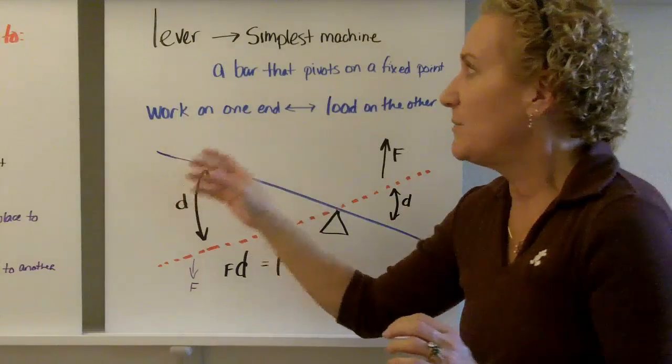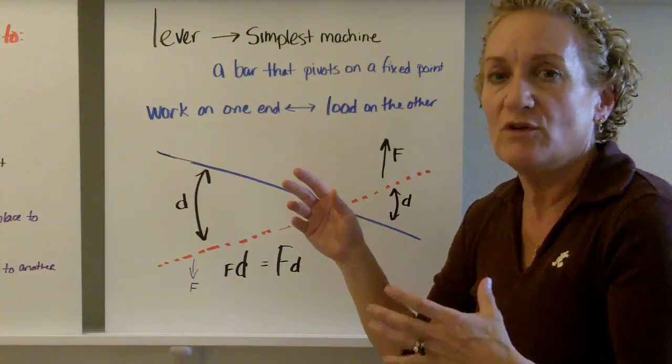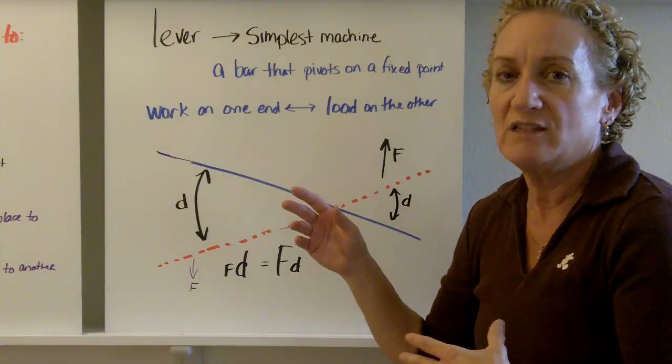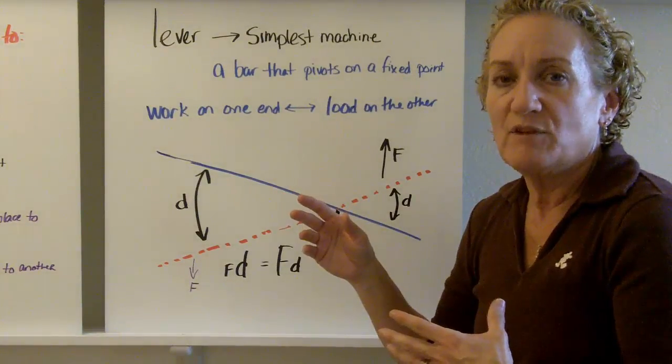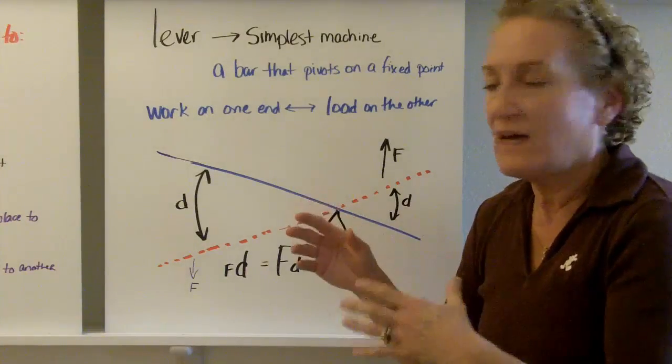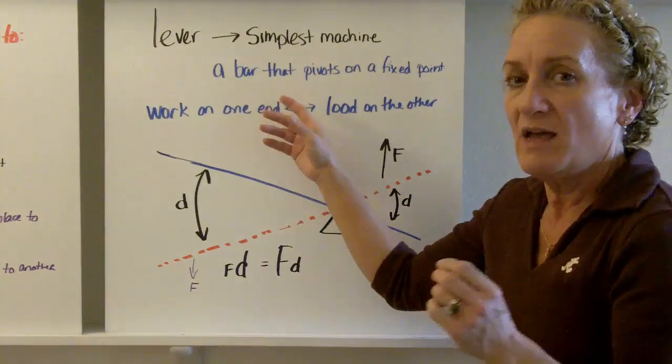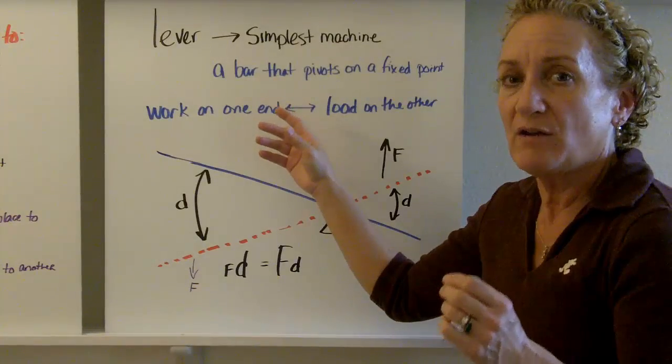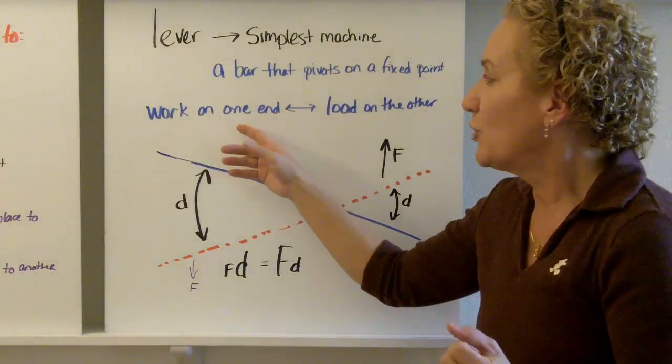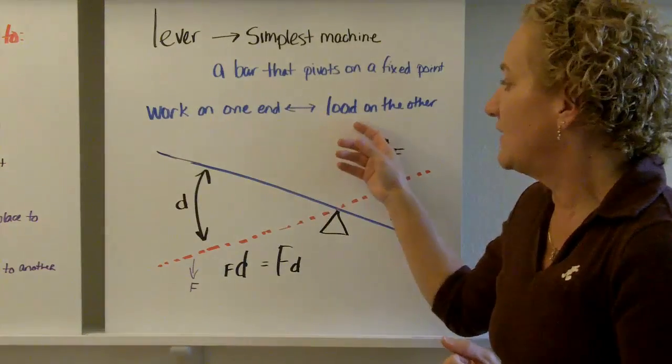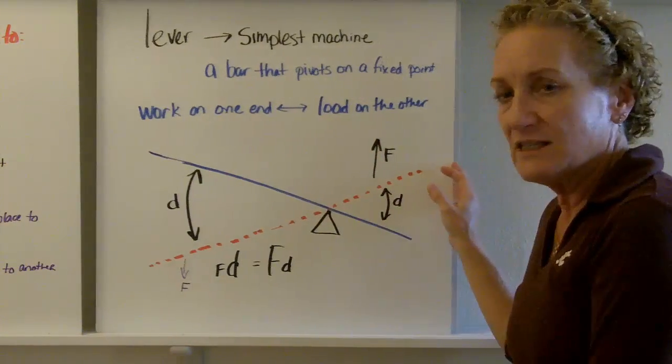So, let's talk just for a minute about a lever. A lever is the simplest machine, and I know that you know there's three classes of simple machines, or three classes of levers, and that you've been working on this since you were a little kid, so we're not going to beat it up, but I just want to remind you that a lever is simply a bar that pivots at some point. We call that point the fulcrum. The work is done on one end, and the load is on the other end. So, let's look at this example.